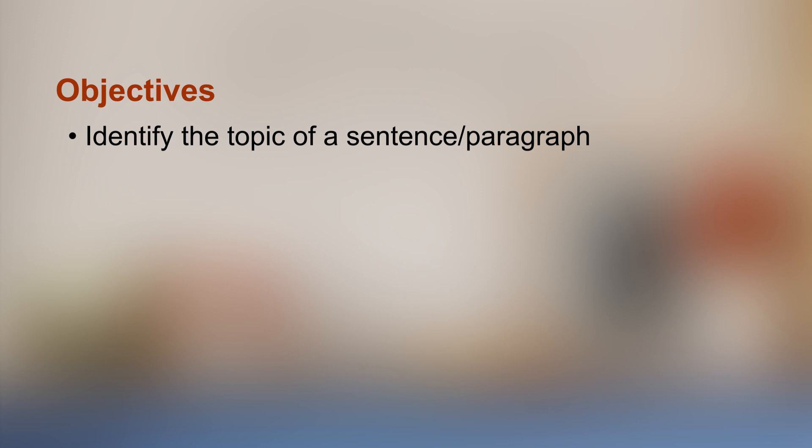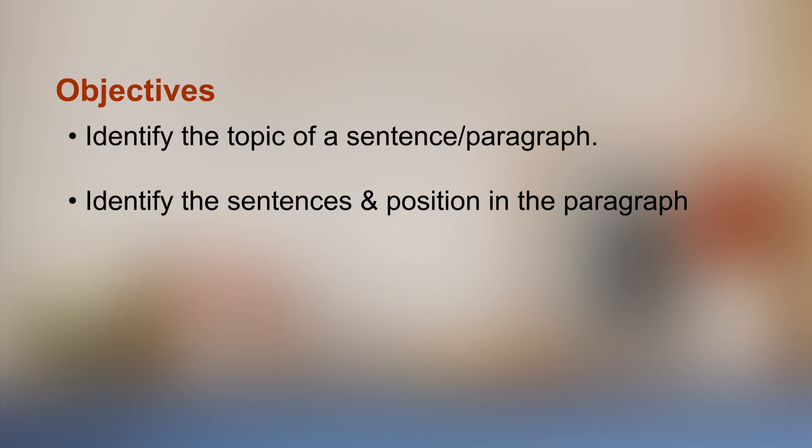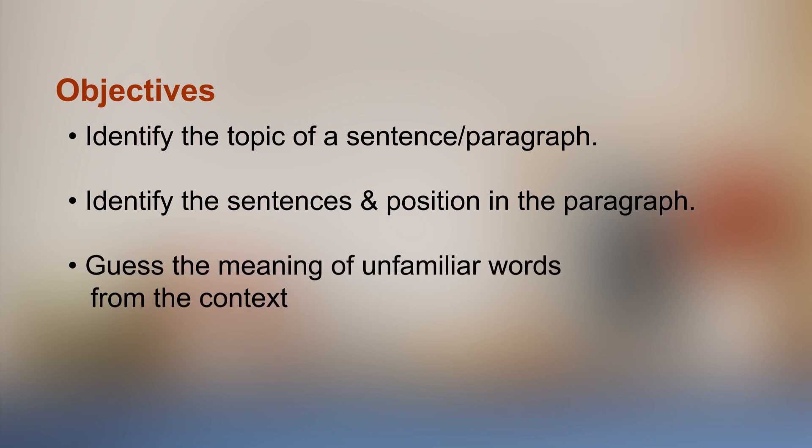By the end of this module, you will be able to identify the topic of a sentence or paragraph, identify the sentences and their position in a paragraph, and guess the meaning of unfamiliar words. In the last unit, we also noted what is involved in reading and who can claim to be a good reader — what should an effective reader be able to do? We hope that you have made it a point to look at the complete list of the abilities of a good reader, what is commonly referred to as the sub-skills of reading.